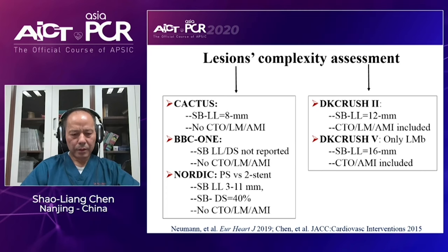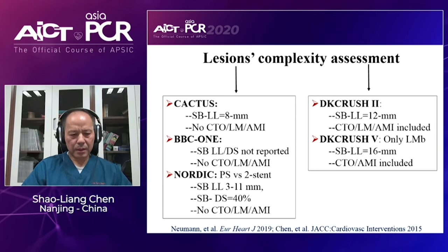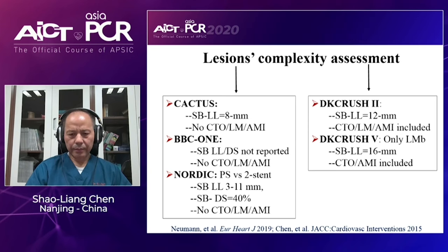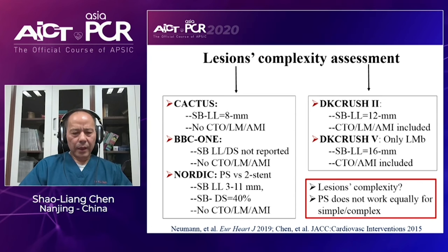In the Nordic study, which compared provisional with a different kind of two-stent technique, the side branch lesion length was only 3 mm in the provisional stenting group compared to 11 mm in the two-stent group. QCA-confirmed side branch diameter stenosis was only 40%. In contrast, from our DK CRUSH II study, side branch lesion length was around 12 mm, and 16 mm in our DK CRUSH V study. CTO, left main lesion, and patients with acute myocardial infarction were also included. The hypothesis is that lesion complexity correlates with increased clinical events.